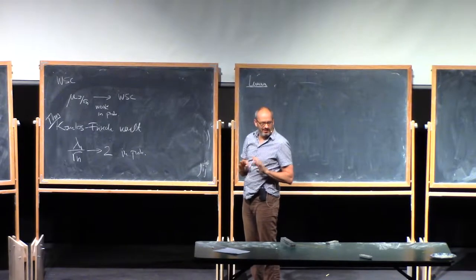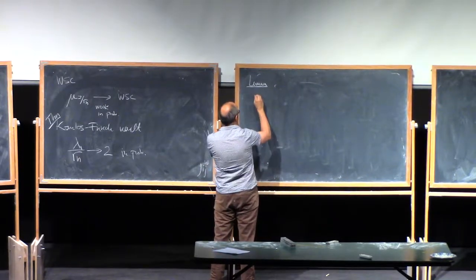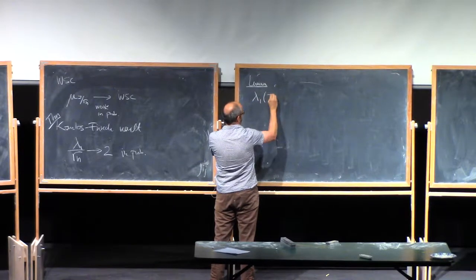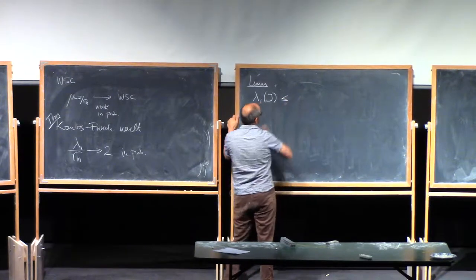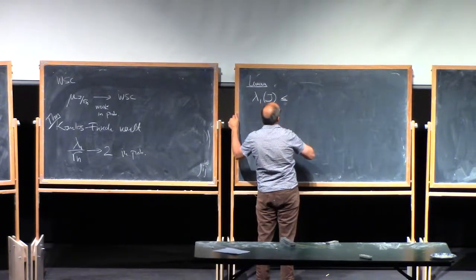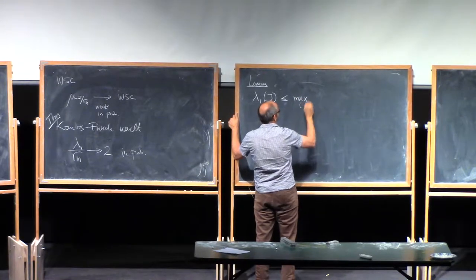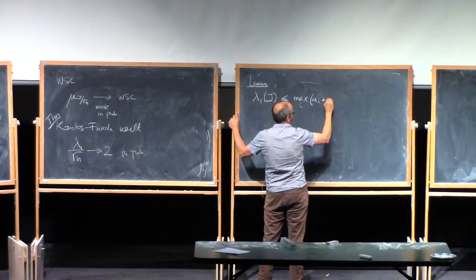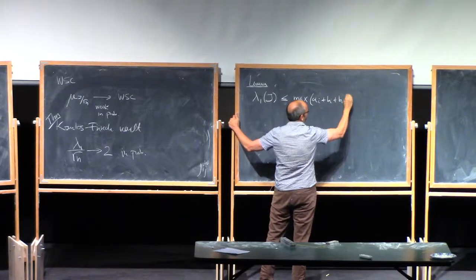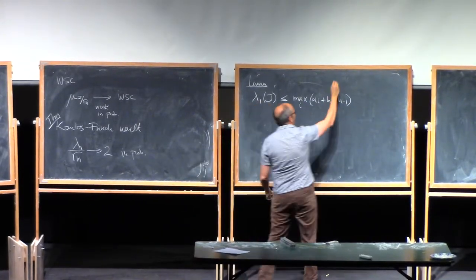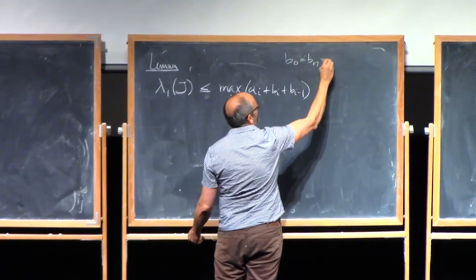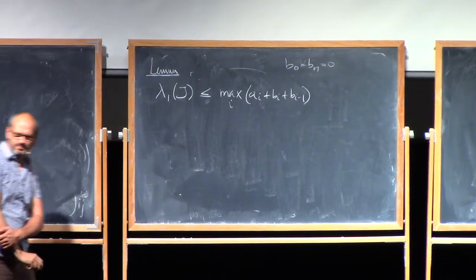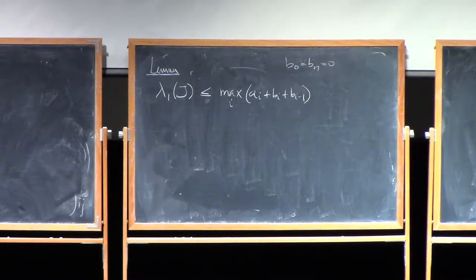And here is the lemma that we need for it. The lemma is extremely simple. So the lemma just says that if you're looking at Lambda 1 of a Jacobi matrix, this is the top eigenvalue of the Jacobi matrix. And this is less than or equal to the max over i of ai plus bi plus bi minus 1. Give it the convention that B0, which doesn't exist, and Bn, which doesn't exist, you just set them to be 0.